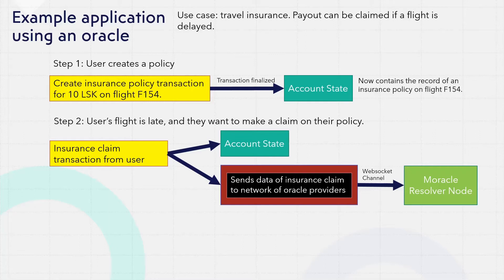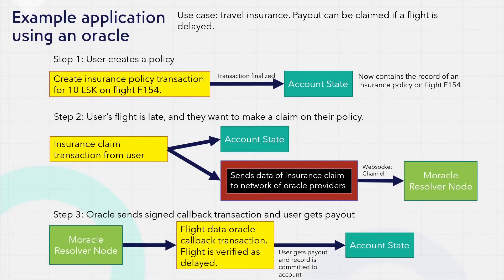We'll explain exactly what that is later. Once the Moracle network reaches consensus, a node sends a callback transaction providing data that the flight is, in fact, delayed. This results in the user getting compensation.